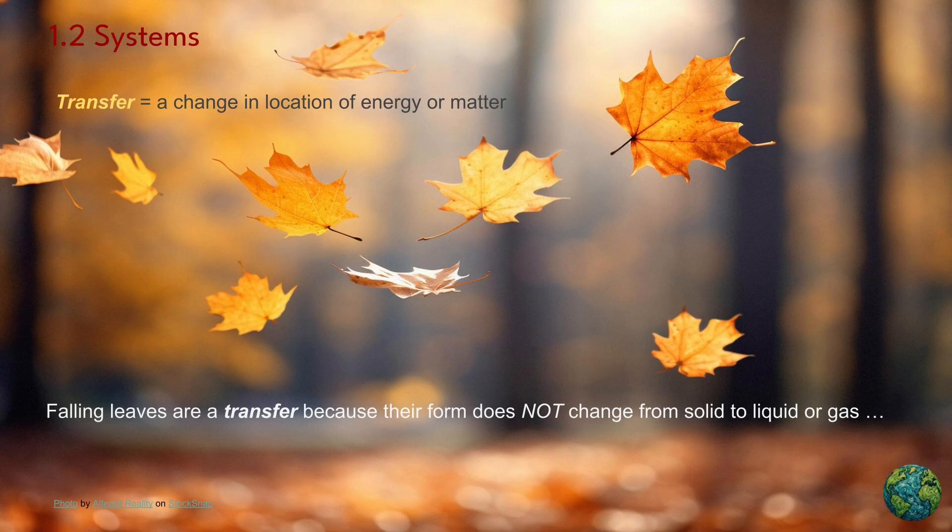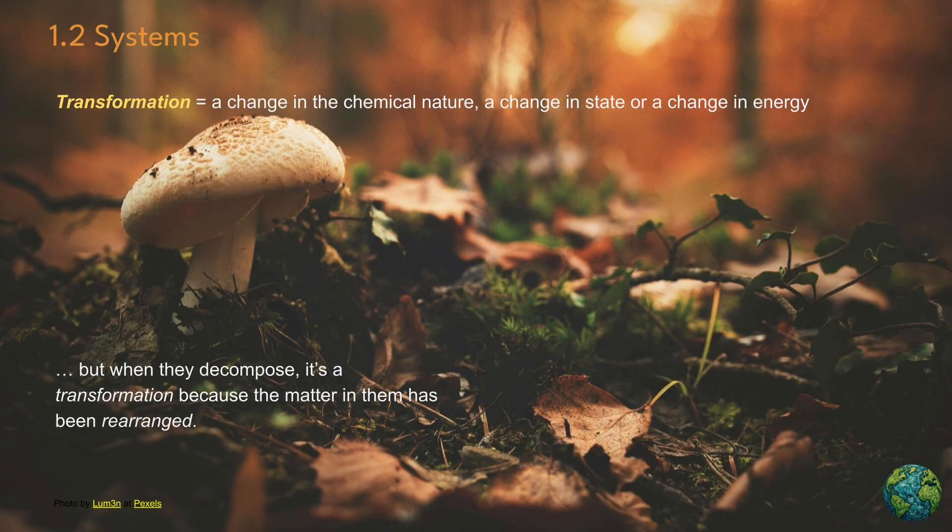In ecosystems, falling leaves represent a transfer of matter from trees to the ground, because they're simply moving from one location to another. However, the decomposition of those leaves is a transformation of them.